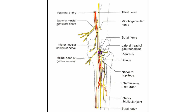The tibial nerve is the larger terminal branch of the sciatic nerve, with a root value of ventral divisions of ventral rami L4, L5, S1, S2 and S3. It lies superficial or posterior to the popliteal vessels, extending from the superior angle to the inferior angle of the popliteal fossa, crossing the popliteal vessels from the lateral to the medial side. Its branches include three genicular or articular branches, one cutaneous nerve and several muscular branches.